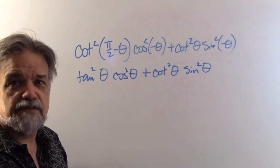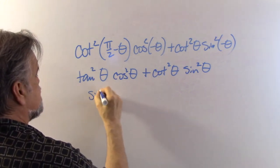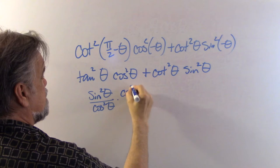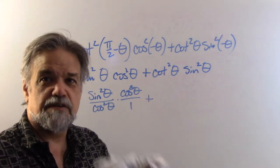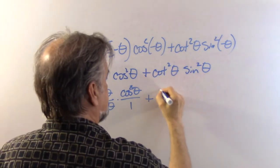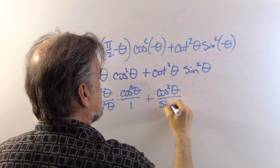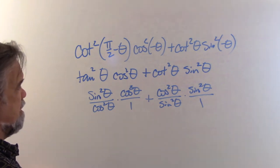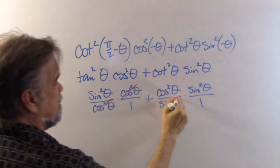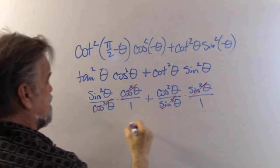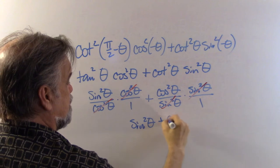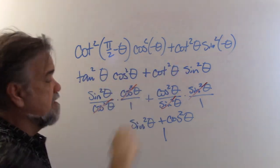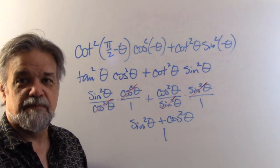Putting everything in terms of sines and cosines for number six: sine squared over cosine squared times cosine squared, plus cosine squared over sine squared times sine squared. The cosine squareds cancel in the first term and the sine squareds cancel in the second, leaving sine squared of theta plus cosine squared of theta, which equals one. The whole expression simplifies to one.